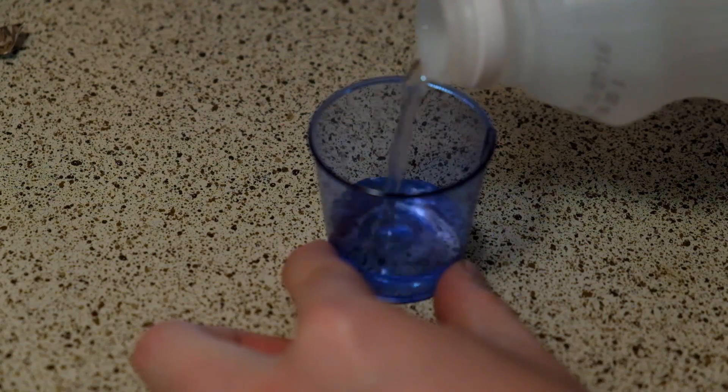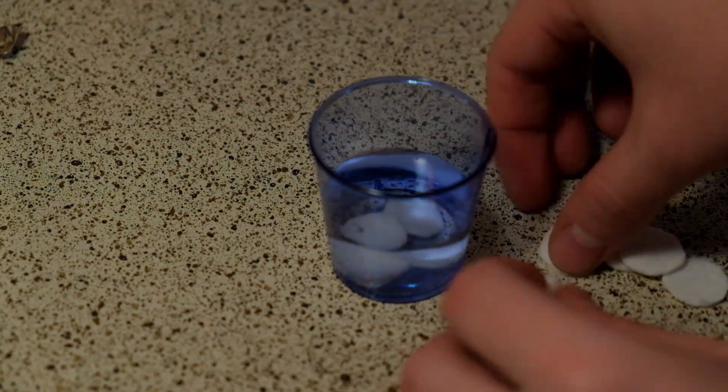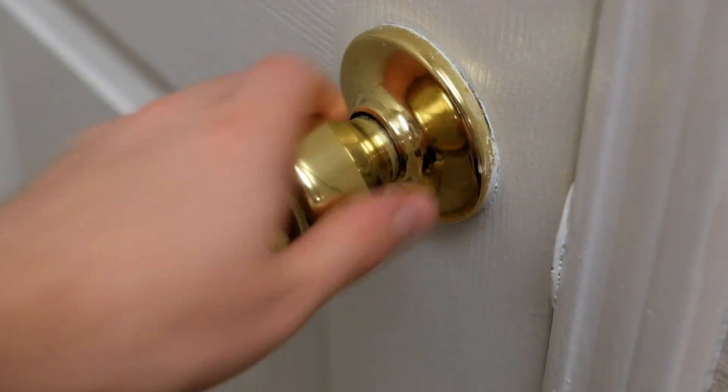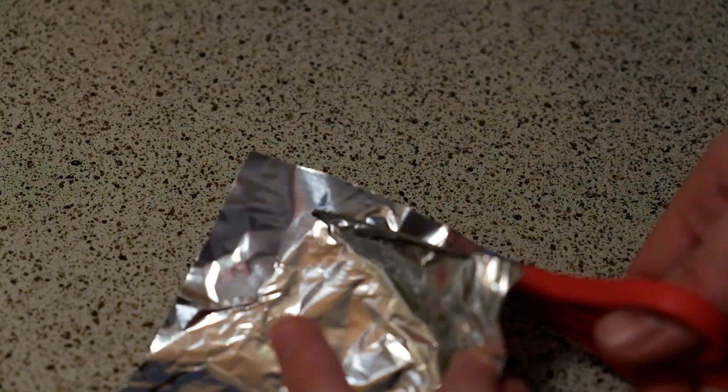Pour some vinegar into a small cup, and add in the circles so they can absorb the vinegar. Then grab some foil and cut two small strips.